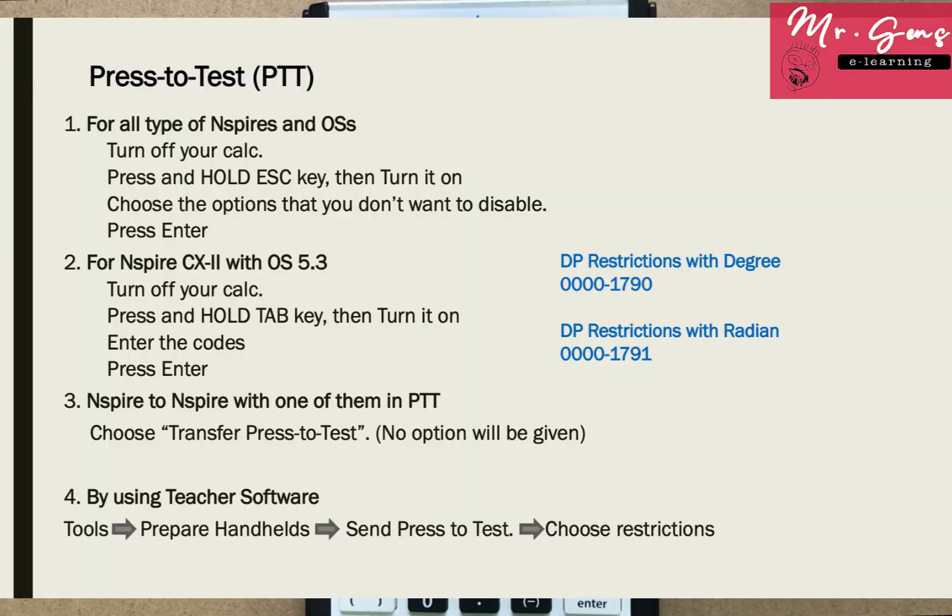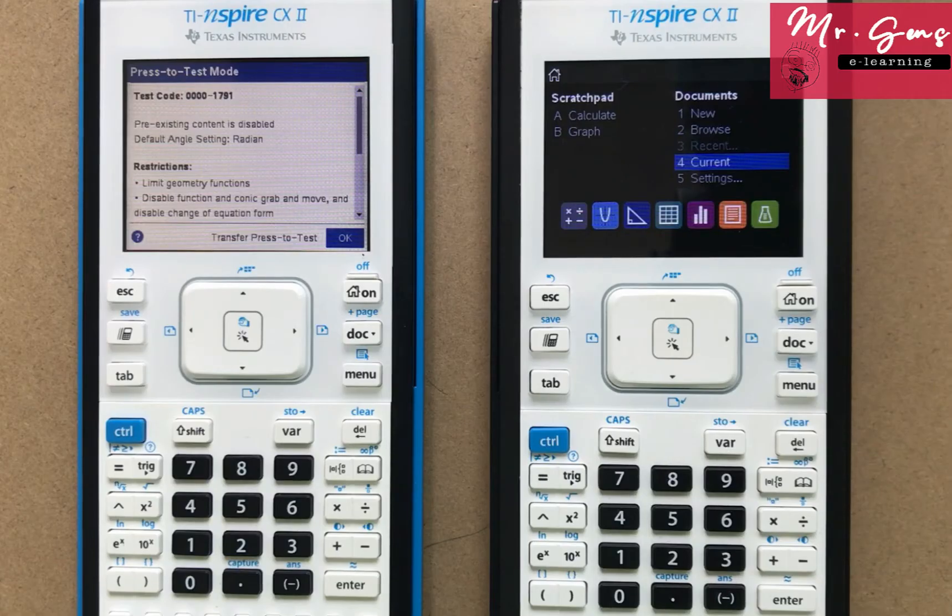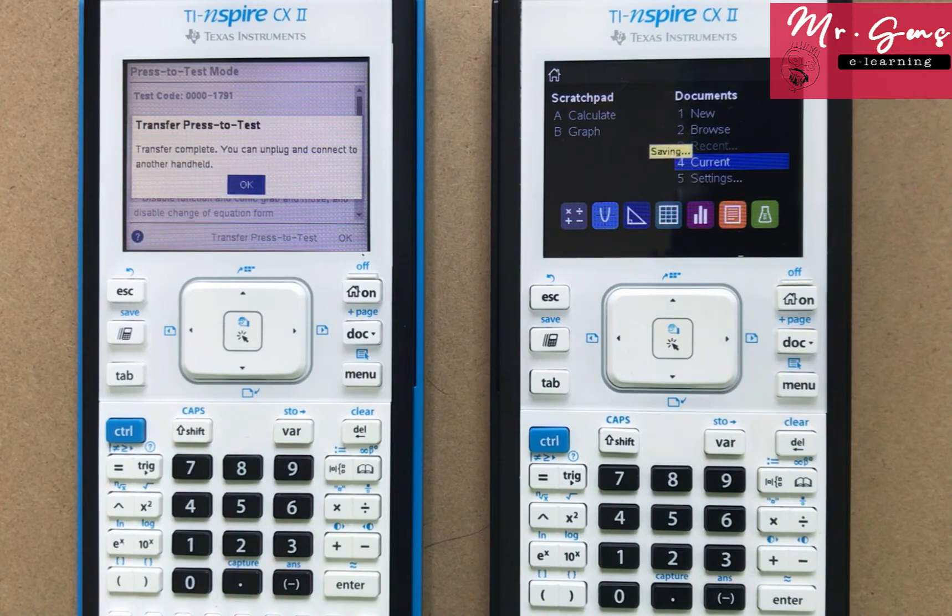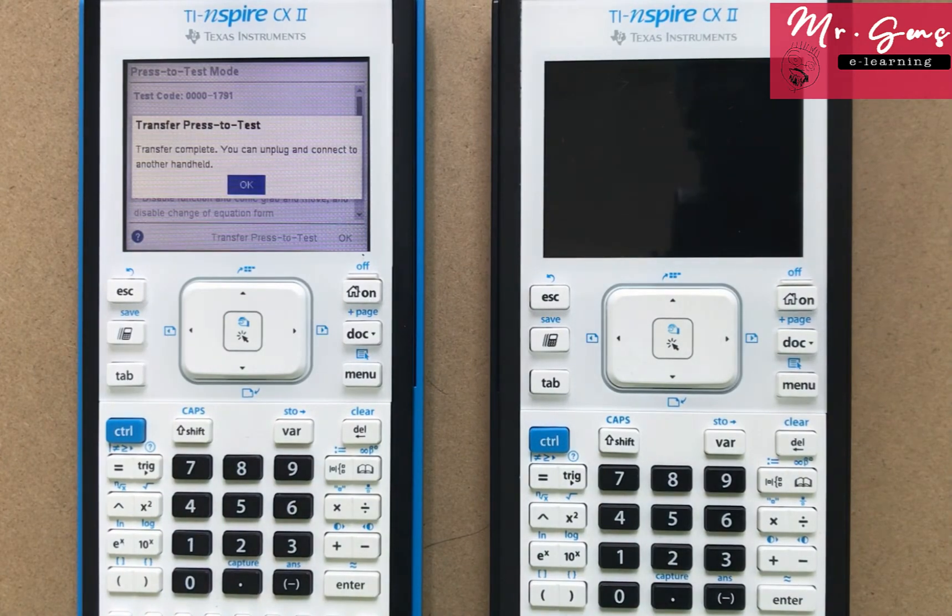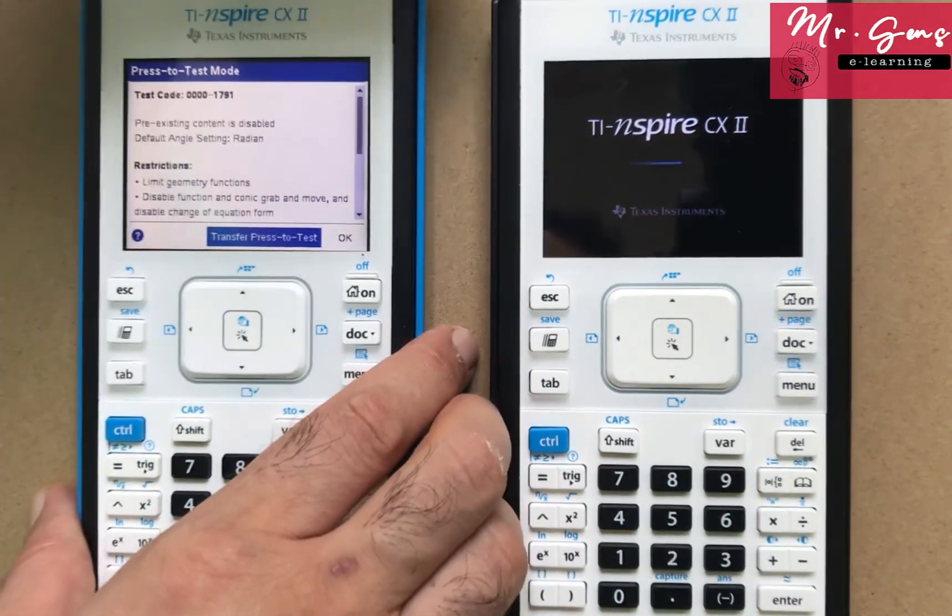For the third option, you need another calculator. Connect the calculators. One of them is supposed to be in test mode. This time you'll see transfer press-to-test. Press OK or Enter. The other one will start in the same test mode as the original. You will not be given any option to choose.